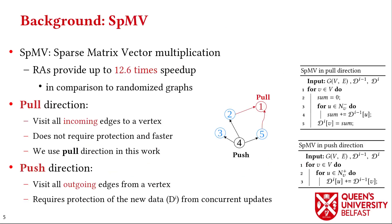In this work we investigate the effects of reordering algorithms on sparse matrix-vector multiplication (SPMV), where reordering algorithms such as SlashBurn, GOrder, and Rabbit Order provide up to 12 times speedup.